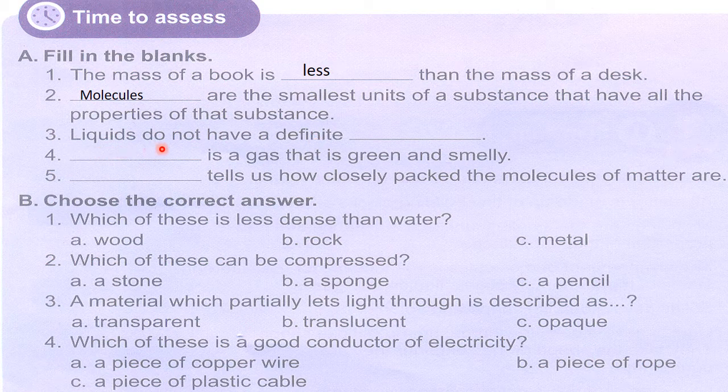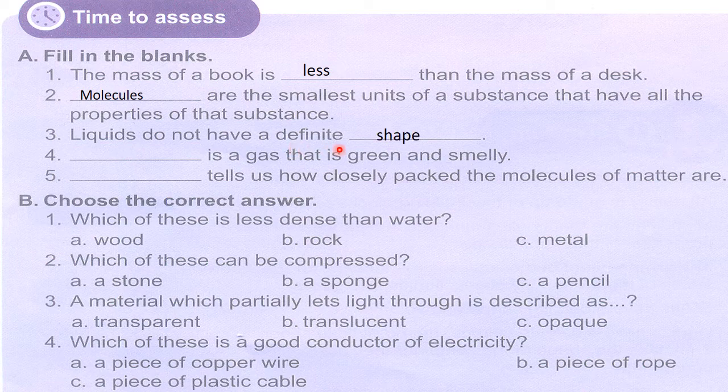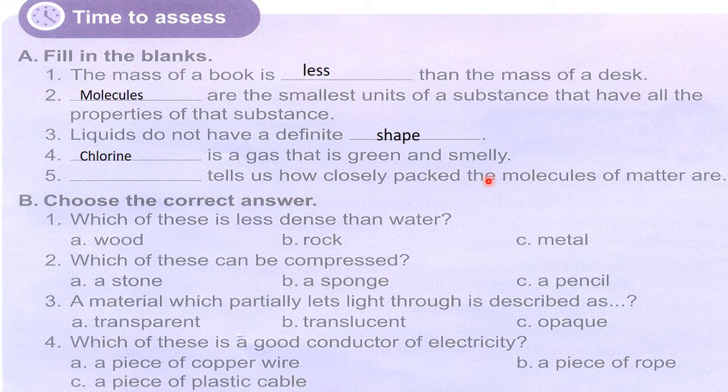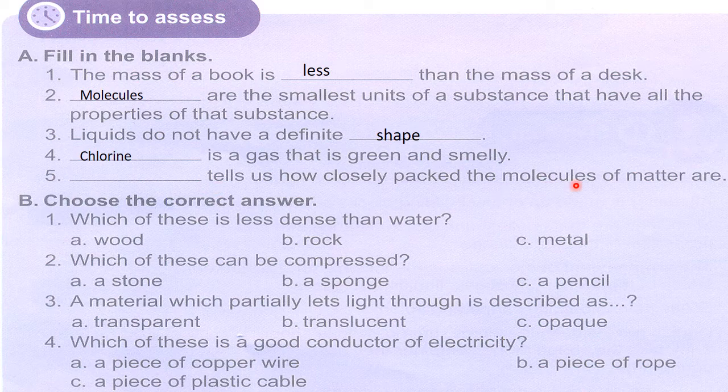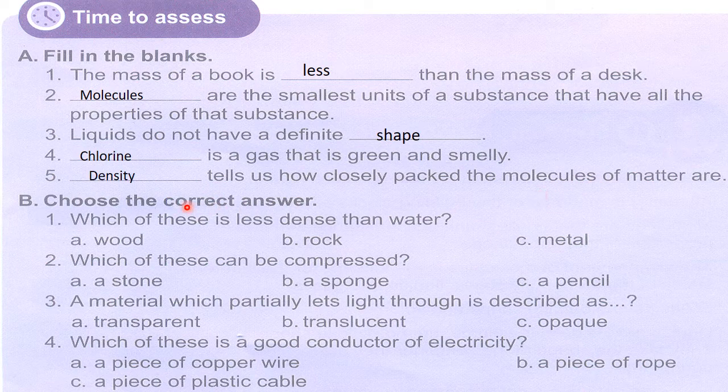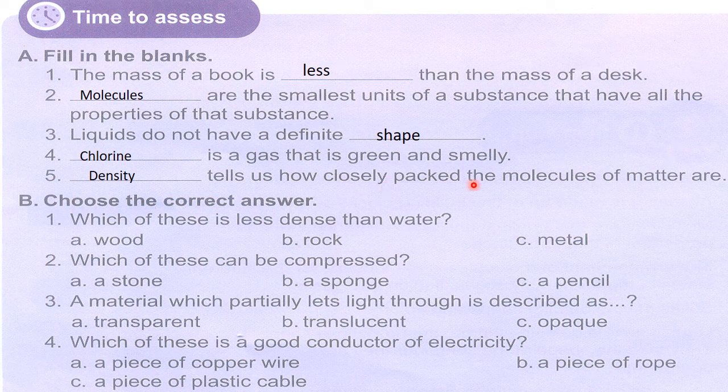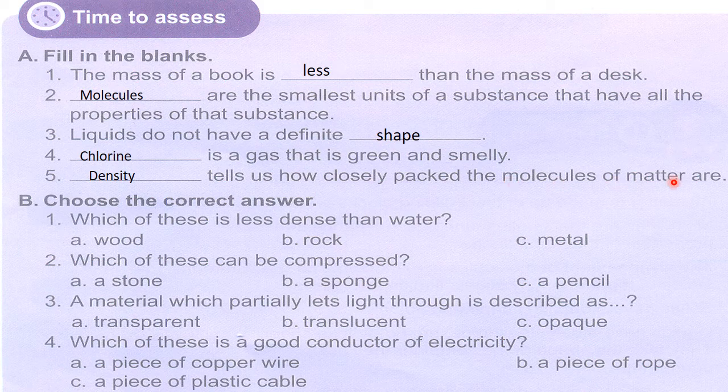Liquids do not have a definite shape. Dash is a gas that is green and smelly - chlorine is a gas that is green and smelly. Dash tells us how closely packed the molecules of matter are - density tells us how closely packed the molecules of matter are.